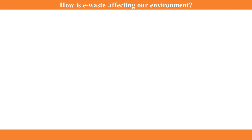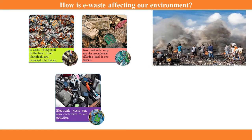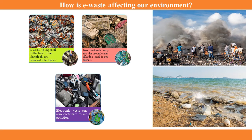Do you know how e-waste is affecting our environment? When e-waste is exposed to heat, toxic chemicals are released into the air, damaging the atmosphere. This is one of the biggest environmental impacts of e-waste. Those toxic materials can then seep into the groundwater, affecting both land and sea animals. Electronic waste can also contribute to air pollution.